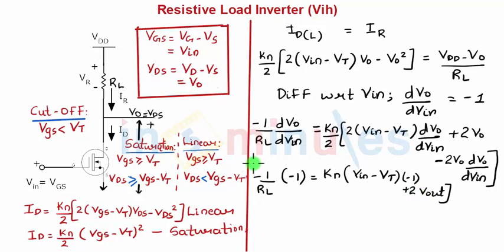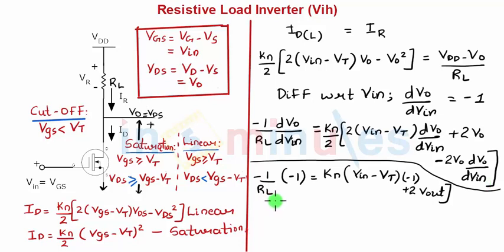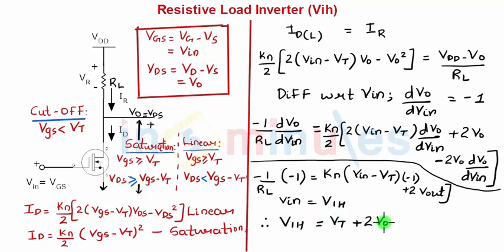After differentiating and simplifying — remember each term is on a separate line, don't get confused — on simplifying the equation and putting Vin = VIH, we get: VIH = VT + 2*Vout - 1/(KN*RL). Let's call this Equation 2.